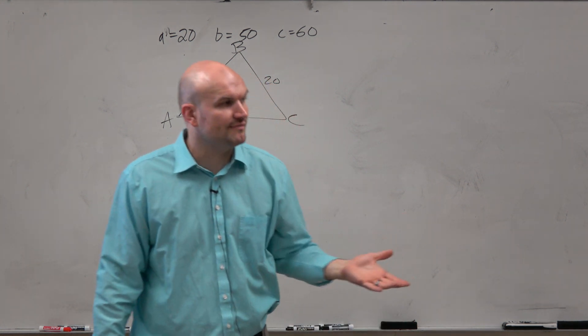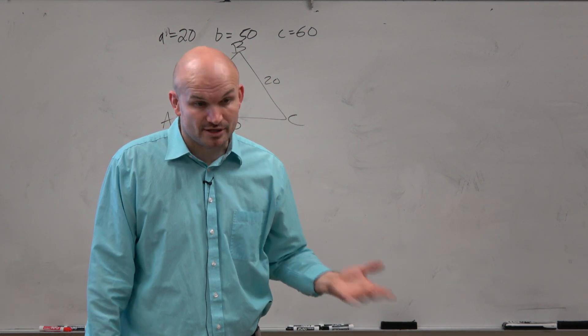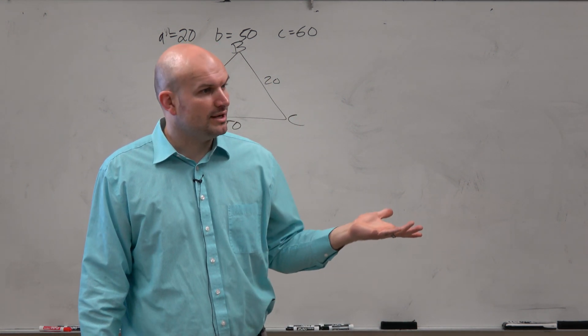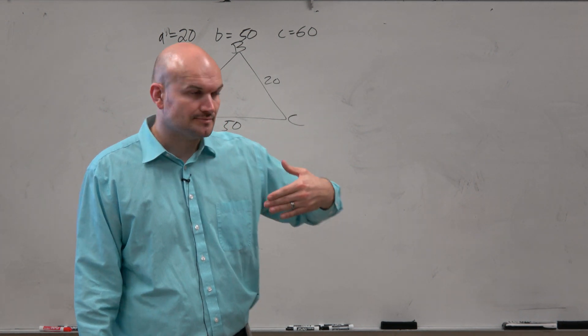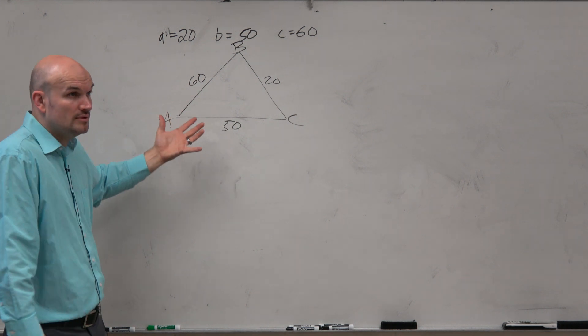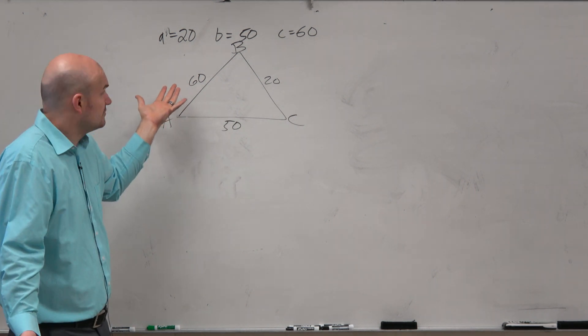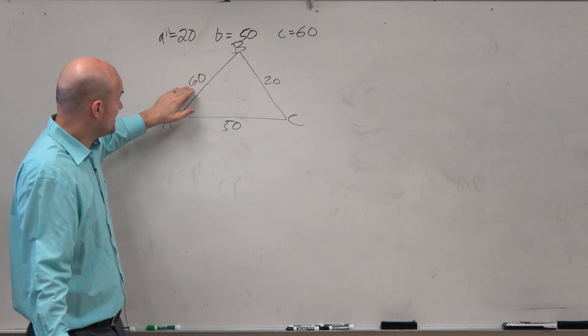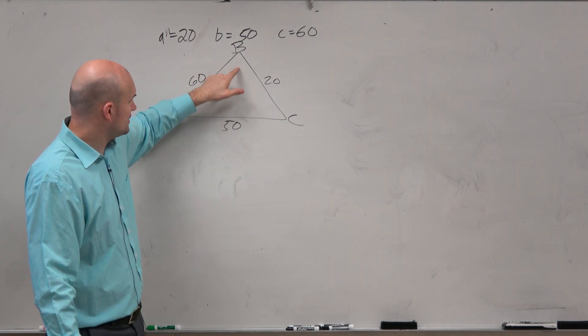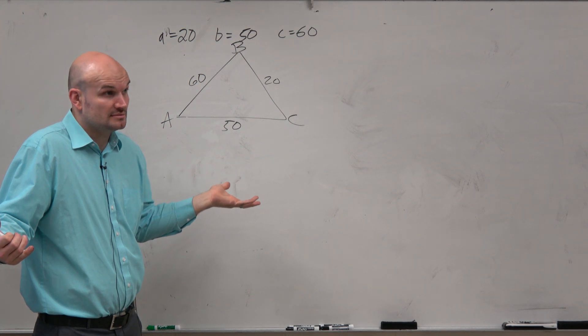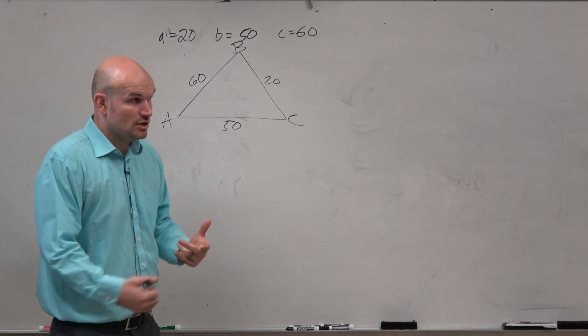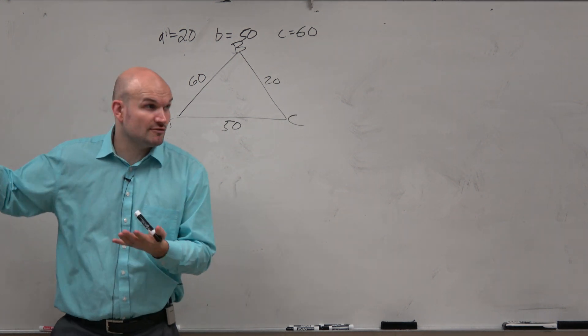All right. So again, for testing, for a quiz which you have next class period, I might not tell you to use law of sines or law of cosines. So we've got to think through this. If we have a ratio, we can create a proportion. But we don't have a ratio. Remember ratio, you have to have the side length and its angle. We don't have any angles. So that means we need to solve for an angle. Agreed?